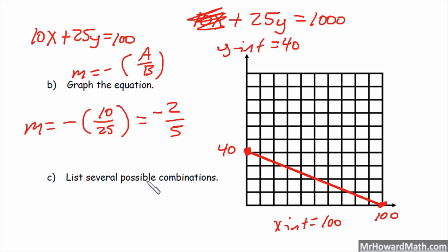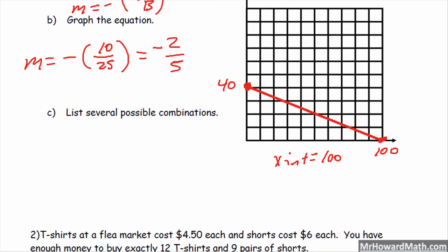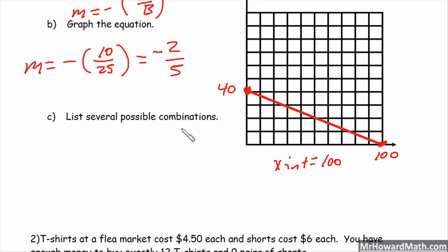So to find possible combinations, we could start with the intercepts. So we'll start with the Y intercept: you could teach zero individual lessons and 40 group lessons. Then we could use the concept of slope to find some additional. So our slope says the Y should go down 2 and the X should go right 5. So the Y would go down 2 to 38, and the X should go up 5 to 5. So we can actually use our slope to help get perfect ordered pairs on this graph.